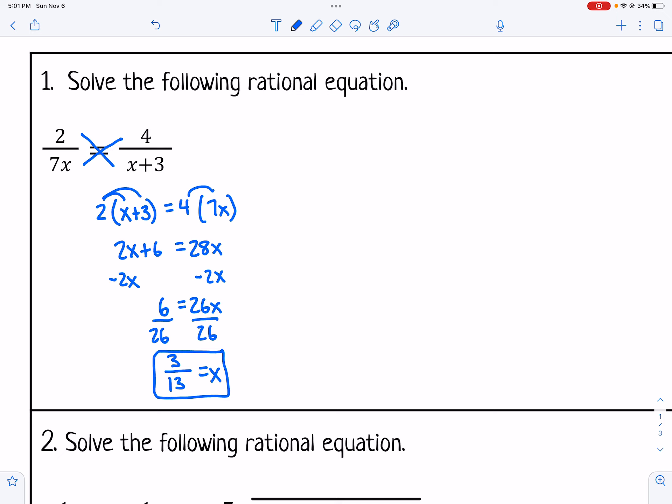You just want to check and make sure that that would not be a restricted value for x. And it's not because 7 times x would be restricted if x equals 0 and this is not 0. And then negative 3 would be restricted because negative 3 plus 3 would equal 0. But again that's not what we got for our value. So we're good.